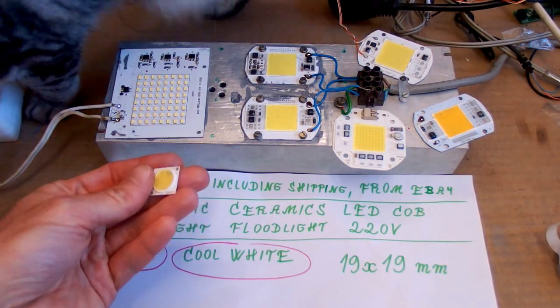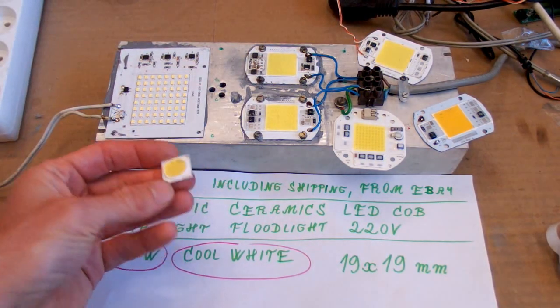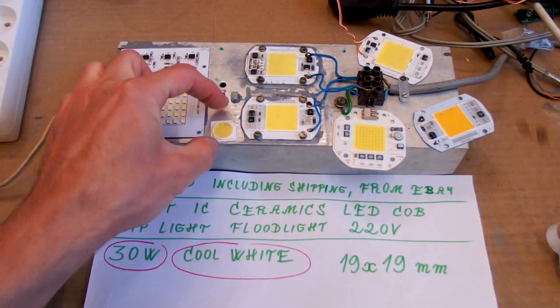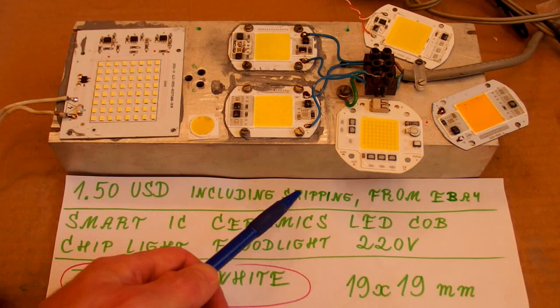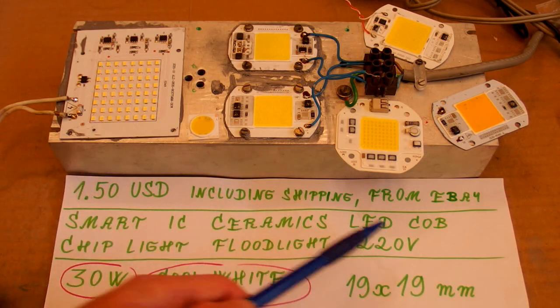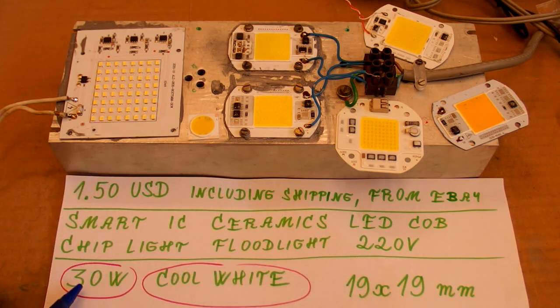So today let's take a look at another mains voltage LED. This time it's this tiny tiny one. It was for $1.50 including shipping and here you can see some keywords and it says 30 watts.